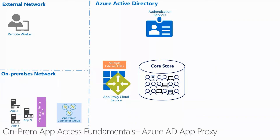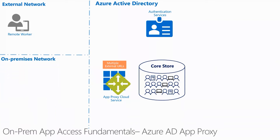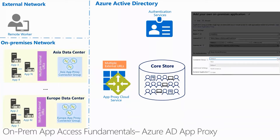Because of this design, it is key that the network channel between the connector and the internal application is performant. Organizations that have multiple data centers or sites with on-premise apps can create connector groups and associate the internal application to a specific group. The channel between the connector and the cloud service needs to be very efficient as well. Since the cloud service is built in Azure, customers can take advantage of technologies such as ExpressRoute if available.